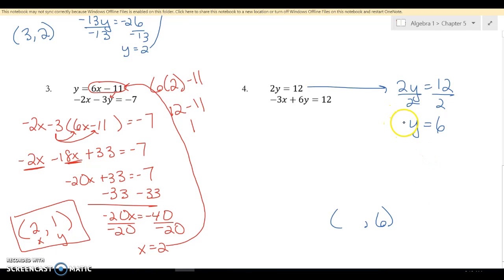So I just found my second answer, but what I have to do now is plug it into the other equation. So it'll be negative 3X plus 6 times Y equals 12. We had just found out that Y was 6. So I get negative 3X plus 36 is equal to 12. I'm going to minus 36 on both sides, so I get negative 3X is equal to negative 24.